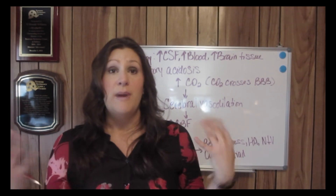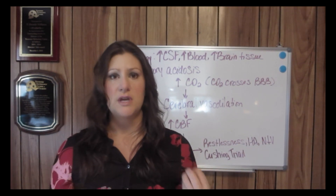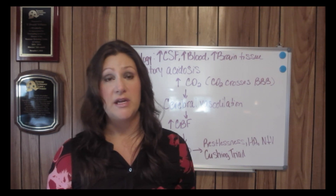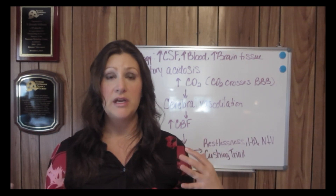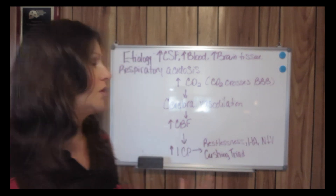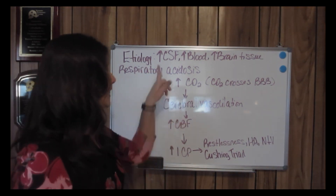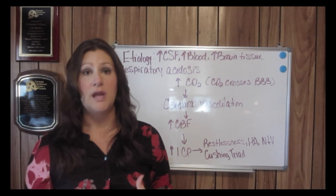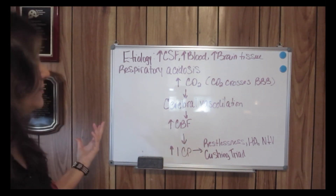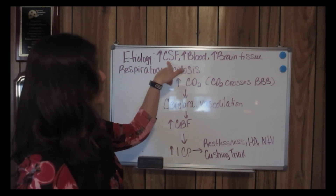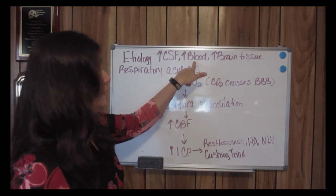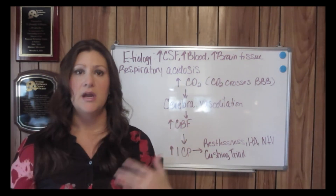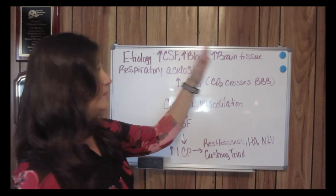In this video, we are going to focus on the patho and the unique signs and symptoms of increased ICP. With increased ICP, there are several things that could be happening, or it could be a combination of all three. There is either an increase in cerebral spinal fluid, an increase in blood or increased cerebral blood flow, an increase in brain tissue — cerebral swelling or cerebral edema — or it could be a combination of all three.